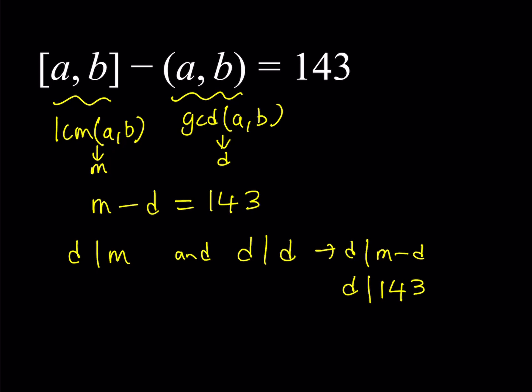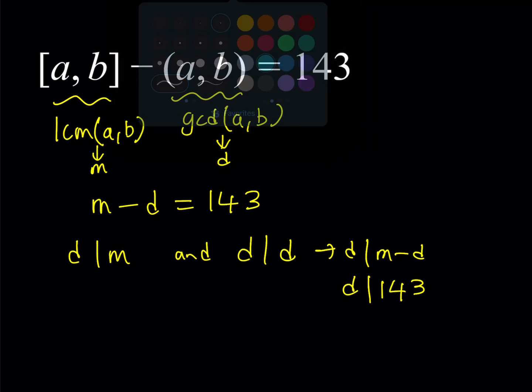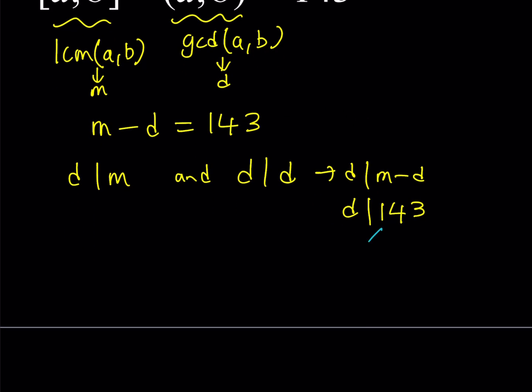This is a very important result because it restricts us to certain numbers. We know that the greatest common divisor must divide 143. The divisors of 143 are 1, 11, 13, and itself, because 143 is a product of two primes and has only four positive divisors.